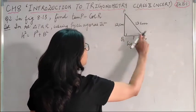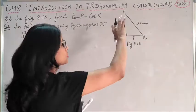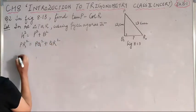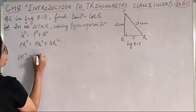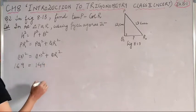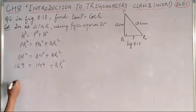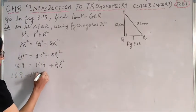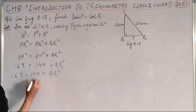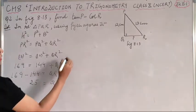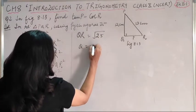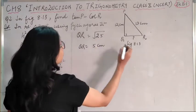PR square equals PQ square plus QR square. So (13)² = (12)² + QR². 169 = 144 + QR². 169 minus 144 is 25, so QR square equals 25. QR is square root of 25. So QR is 5 cm.